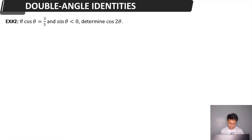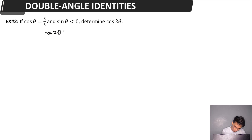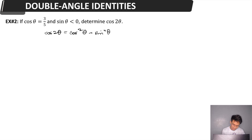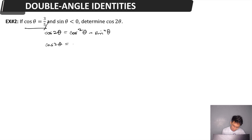Example number 2 uses the same given conditions from example number 1. This time we are asked to find cosine 2 theta. We will apply the double angle identity for the cosine function. Cosine 2 theta equals cosine squared theta minus sine squared theta — using theta in place of A from our formula. We already know the value of cosine theta and from problem number 1 we found that sine theta equals negative 4 over 5.